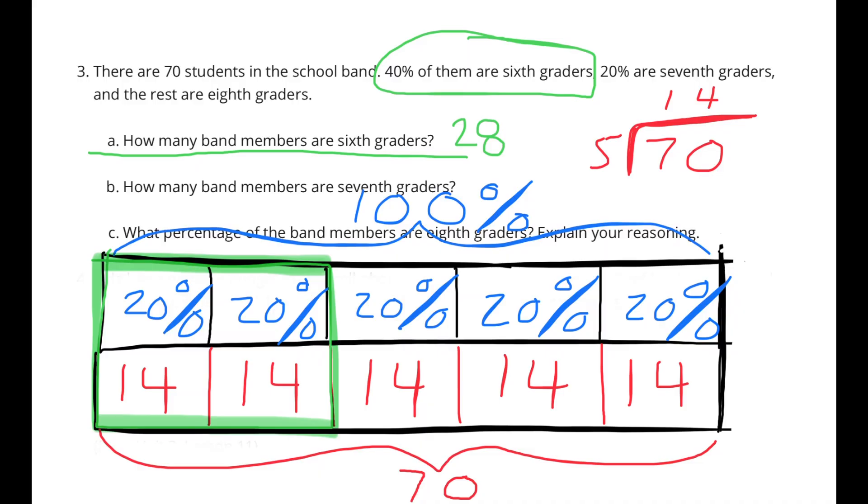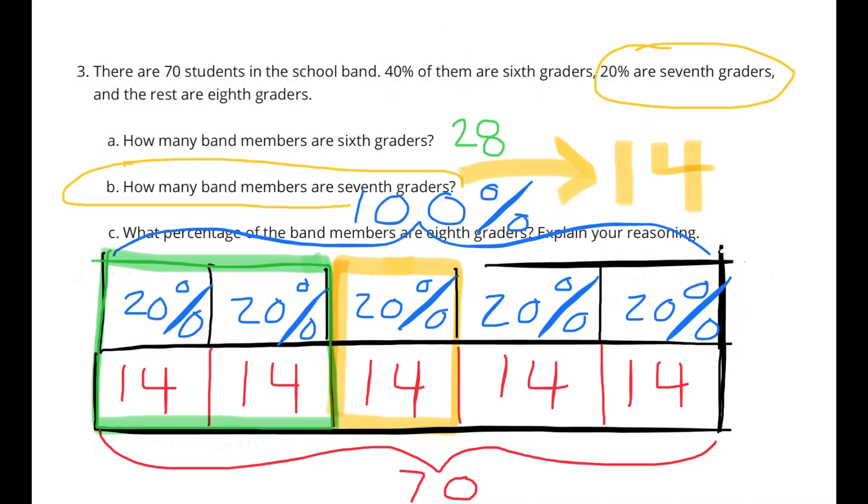How many band members are in 7th grade? Well, they said that 20% are 7th graders, so the number 14 is underneath 20%. So we know that 14 students, or 20% of the students, are in 7th grade.